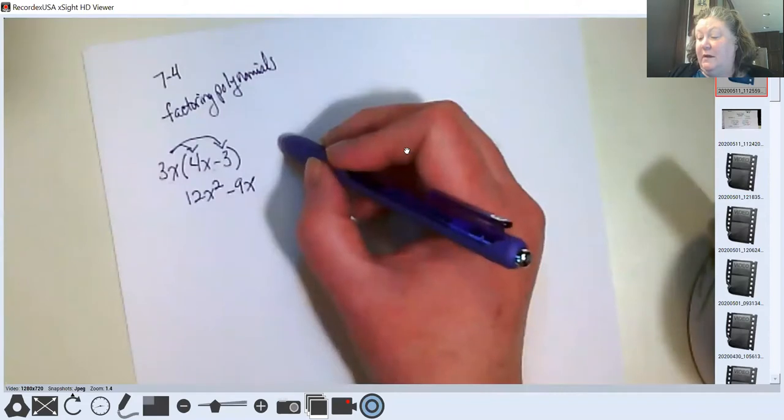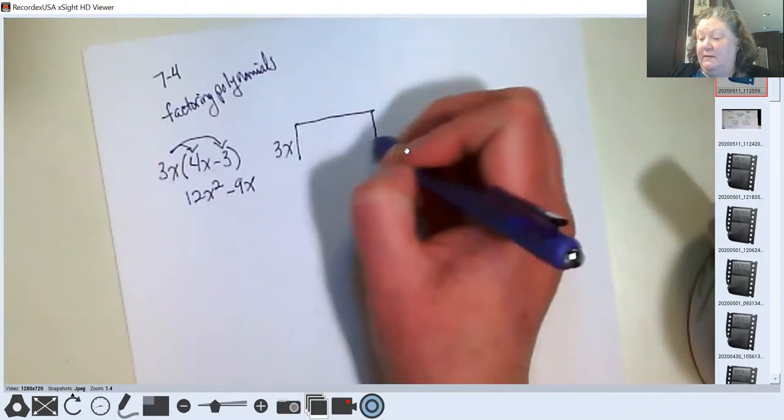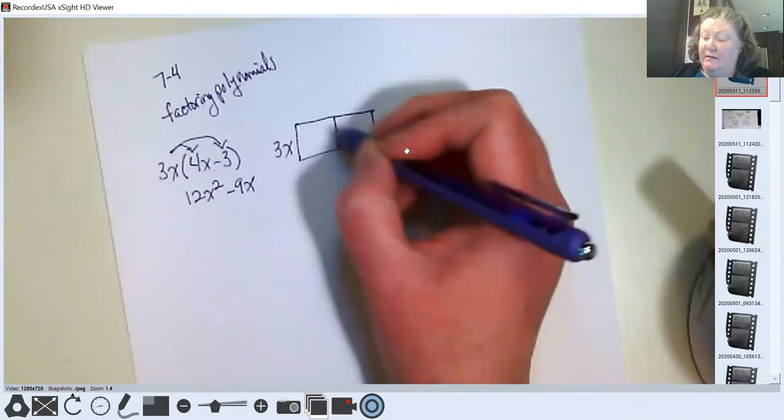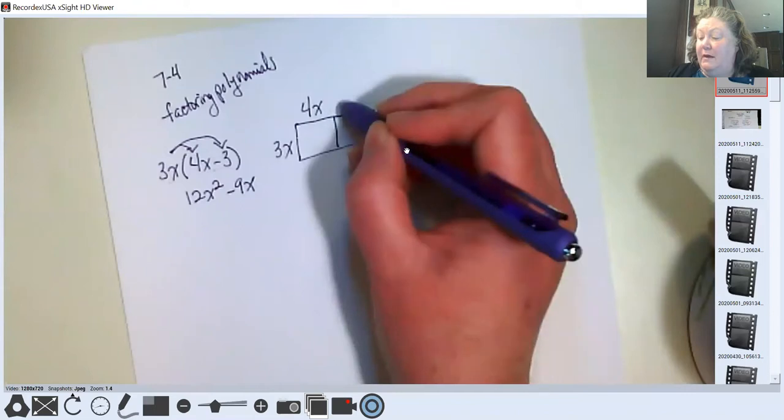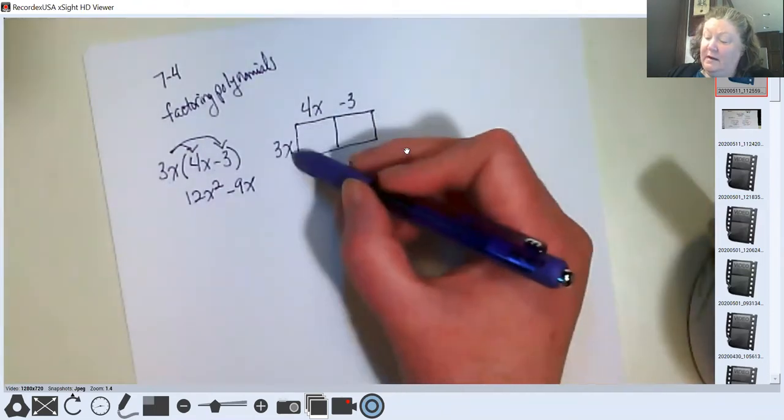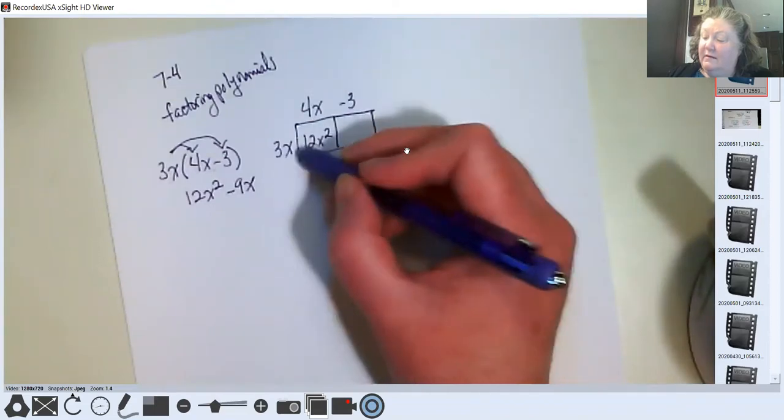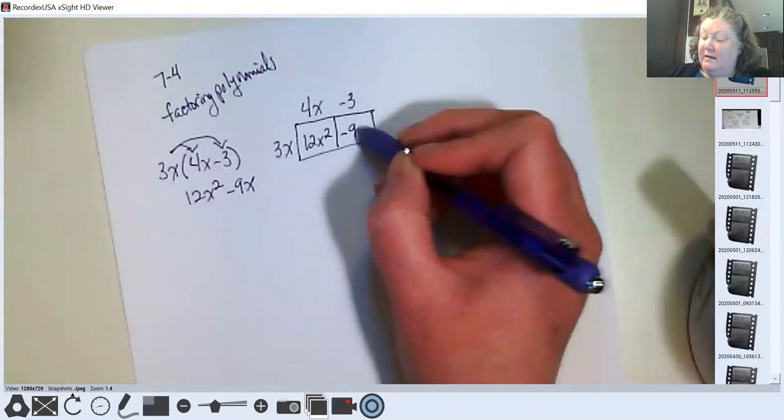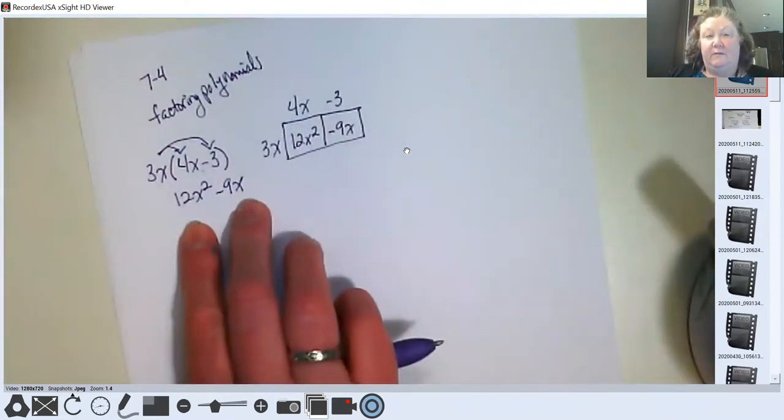We've also done this using the box method. Typically we do it when we've got a binomial by a binomial or something bigger, but it works with this as well. So 3 times 4 and x times x would get us 12x squared, and 3x times negative 3, negative 9x. So in the box we have the same terms that we got here from distributive property.